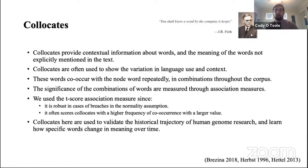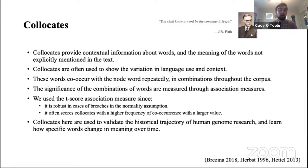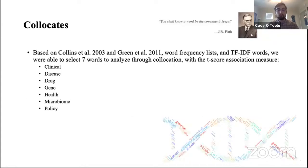As J.R. Firth said, 'You shall know a word by the company it keeps.' Collocates provide contextual information about words — meaning not explicitly mentioned in the text — and show the variation in language use and context. These words co-occur with a node word repeatedly throughout the corpus; the significance of combinations is measured through association measures. We use the t-score association measure, which is robust in breaches of normality assumption and scores collocates with higher frequency of co-occurrence with a larger value. We selected seven words to analyze: clinical, disease, drug, gene, health, microbiome, and policy.